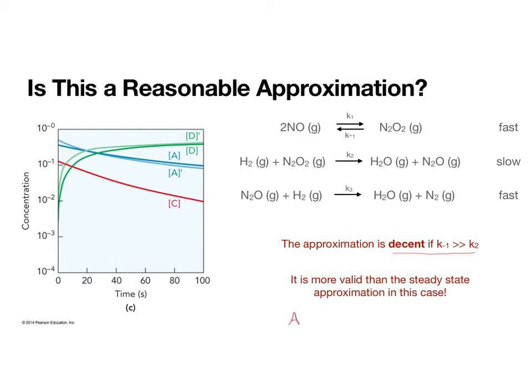This graph is giving us the reaction that's very similar to the one we've been working with. Our concentrations of A, C, and D are graphed, and these are experimental. And predicted are the primes. We don't have the C prime.